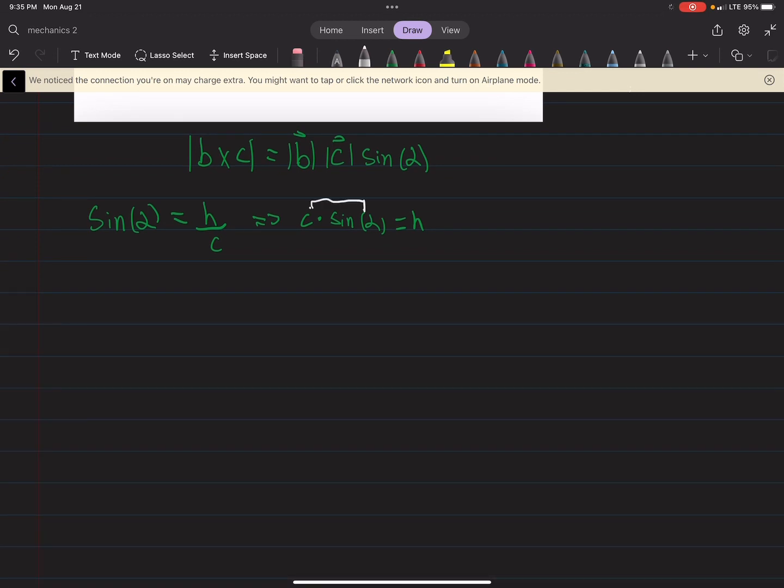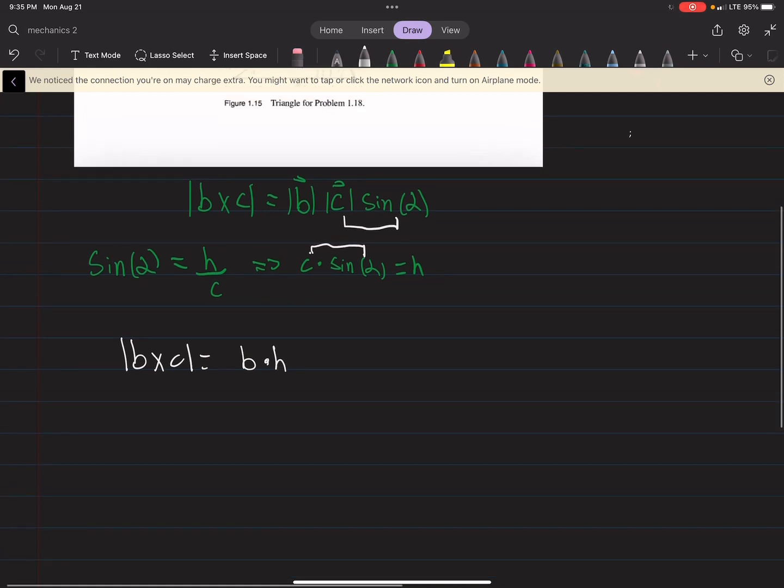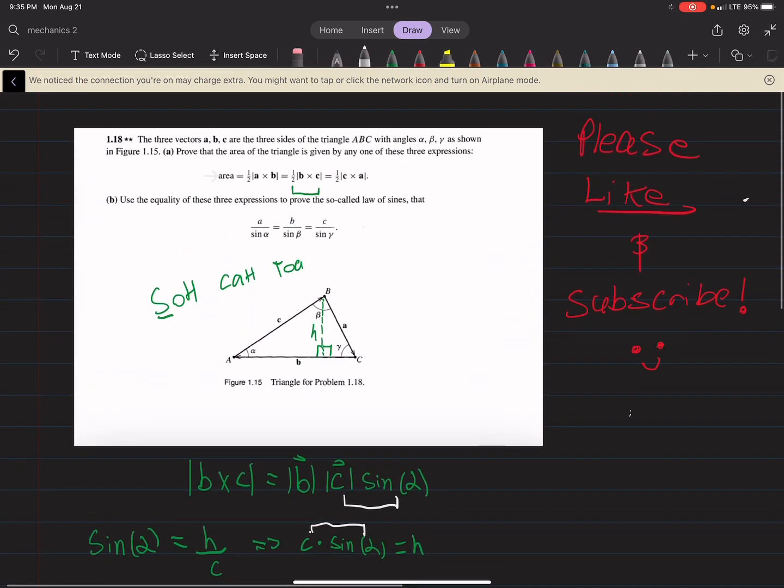So C sine theta, well, that's just H. So the cross product, B cross C, is really just B times H. And again, let's remember that the area of a triangle is one-half the base times the height. So if I divide both sides by a half, we get exactly what we want here, we get that part.